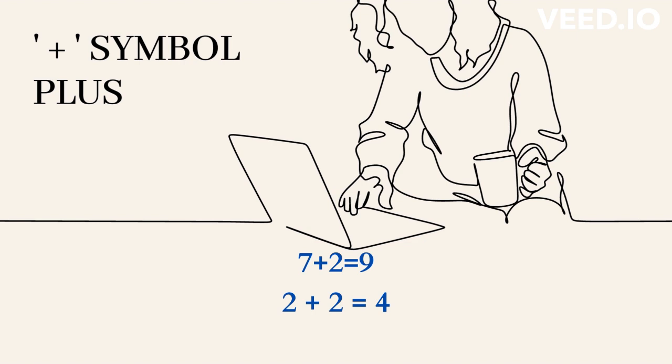2 and 2 is 4. Informal. 2 plus 2 equals 4. Formal.